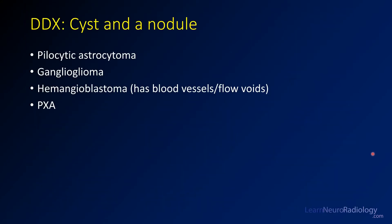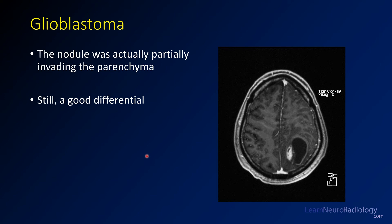Think about the cyst-and-nodule differential: pilocytic astrocytoma, ganglioglioma, and PXA are considerations. Hemangioblastoma wouldn't be at the top here because there are no flow voids visible around it. This one actually turned out to be a glioblastoma. Looking more closely at the nodule, you could see invasion of parenchyma making it appear more aggressive. But again, giving a good differential is the key — you're going to miss some of these, and you've got to give a smart differential.